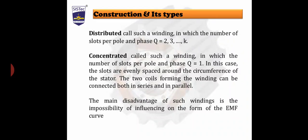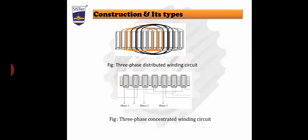The two coils forming the winding can be connected both in series as well as in parallel. The main disadvantage of concentrated winding is the impossibility of influencing the form of the EMF curve. The three-phase distributed winding circuit and the three-phase concentrated winding can also be seen in the figures.